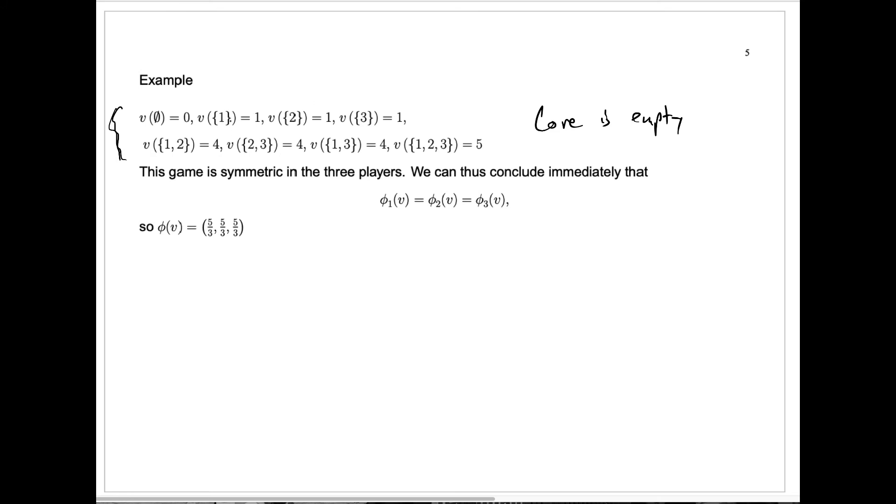If you add player one to a coalition that already is just player two, you add three units to the value. You go from the value of player two is one to the value including player one is four. And you get exactly the same result if you added player three. The same is true in every possible way. You can interchange the players and it doesn't make any difference.